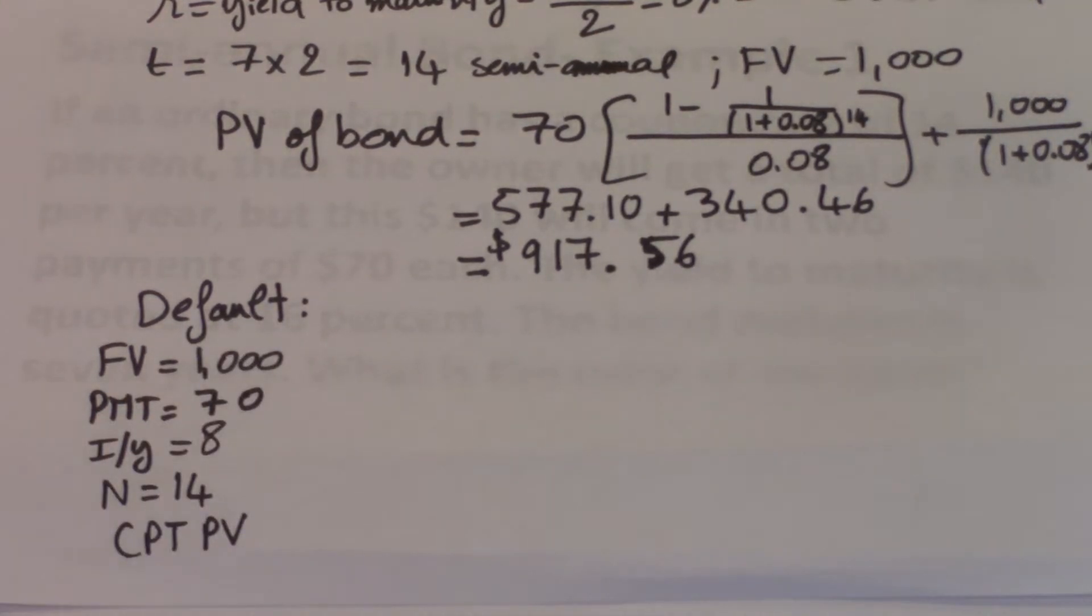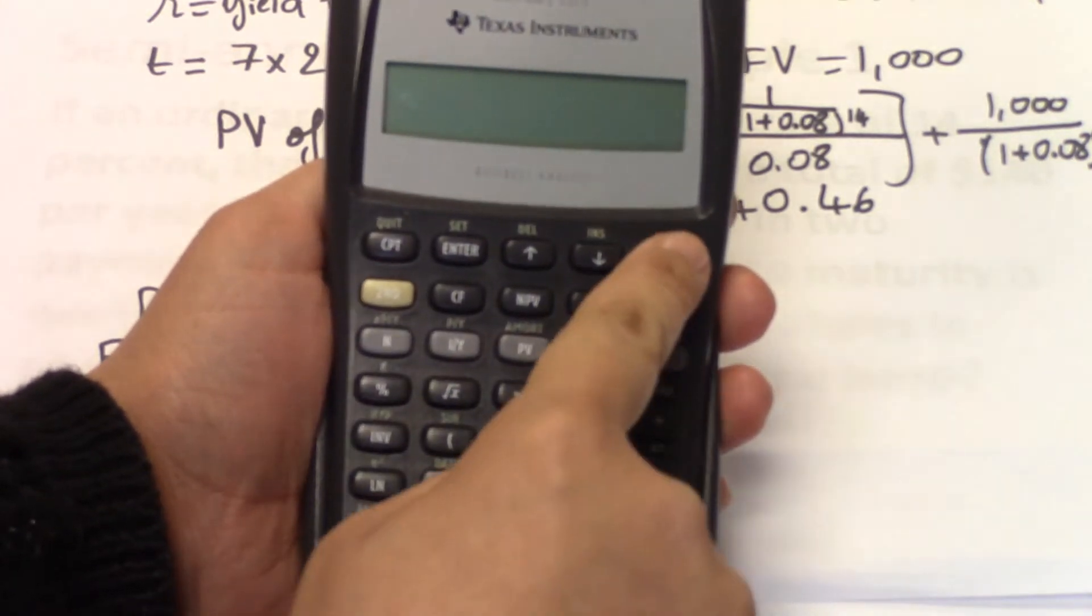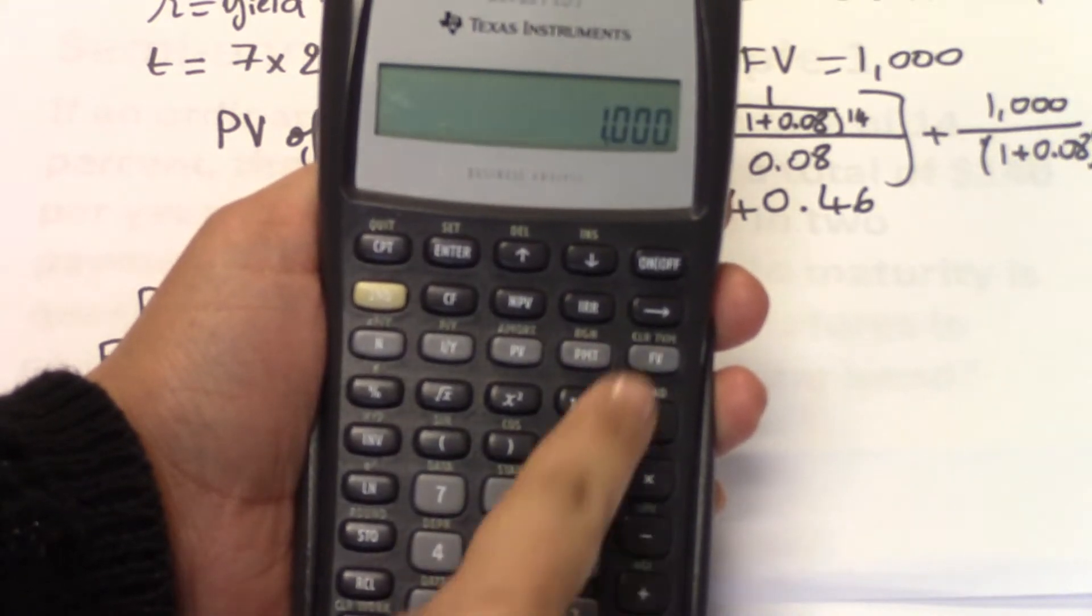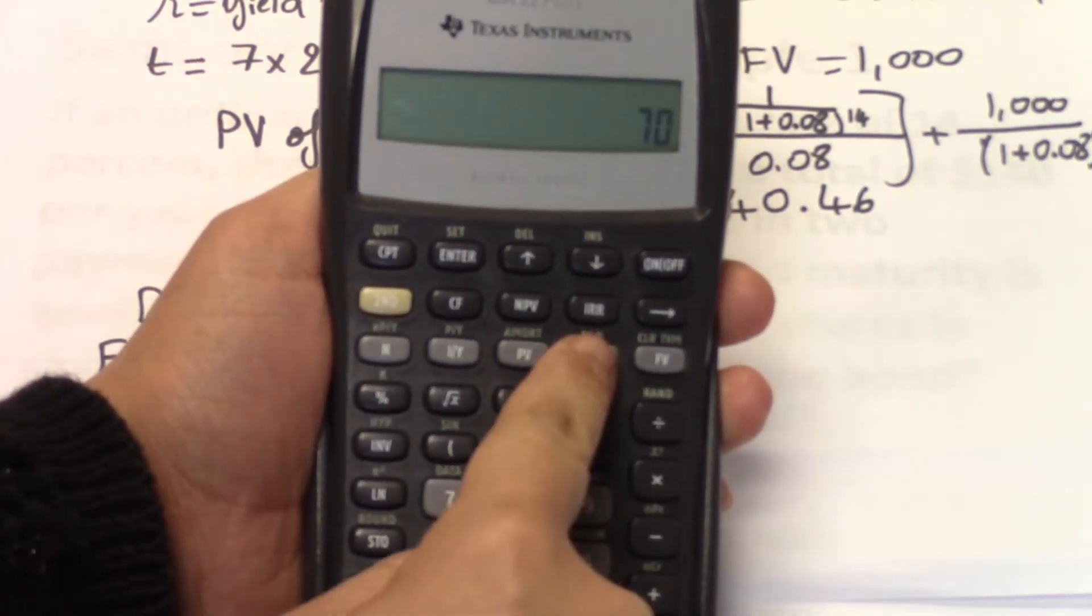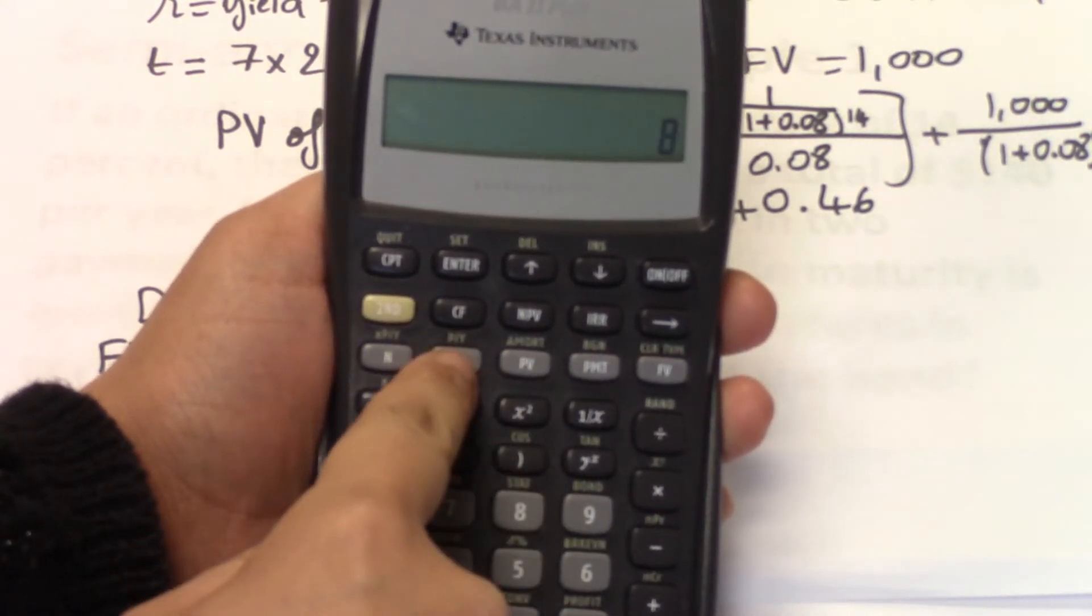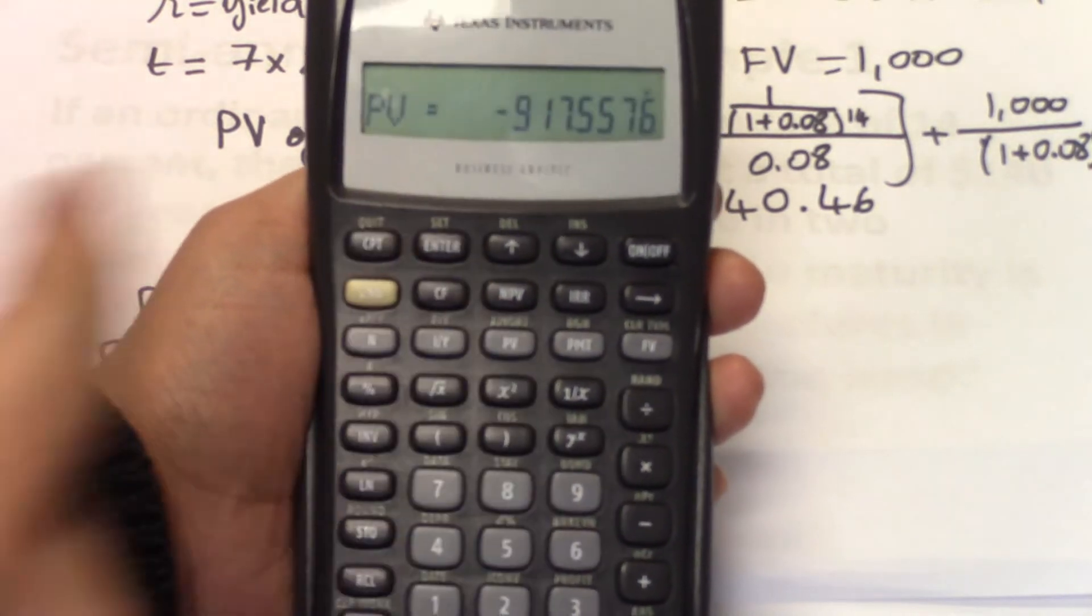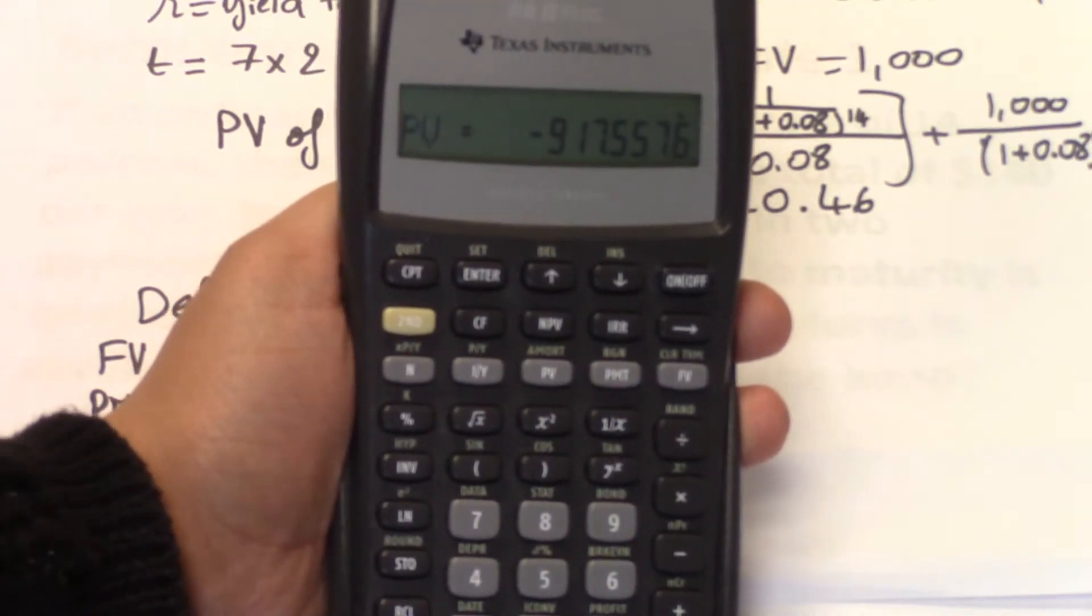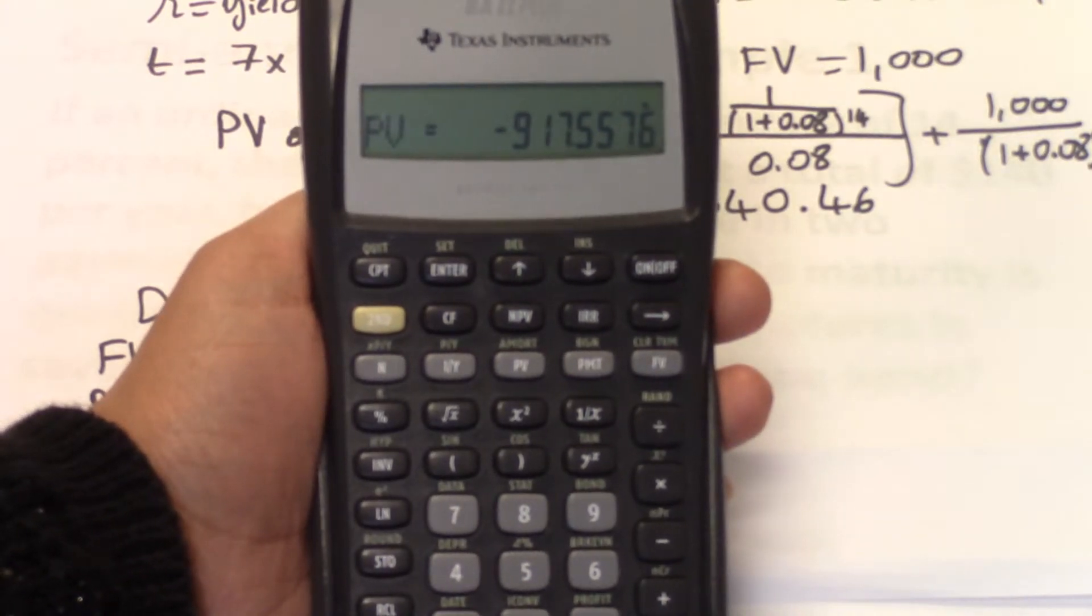So if we were to do the default, we input our variables. So second FV, second CE/C. So 1,000 is your future value. 70 is your payment. 8 is your I over Y. 14 is N. Compute PV. And so you get a price of 917.55. So this is really close to what we got initially.